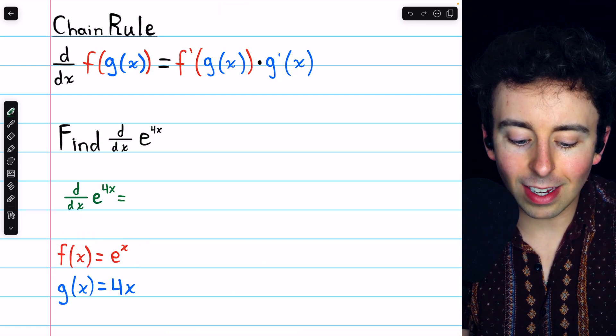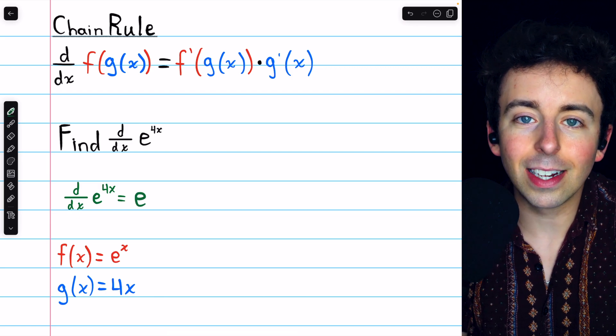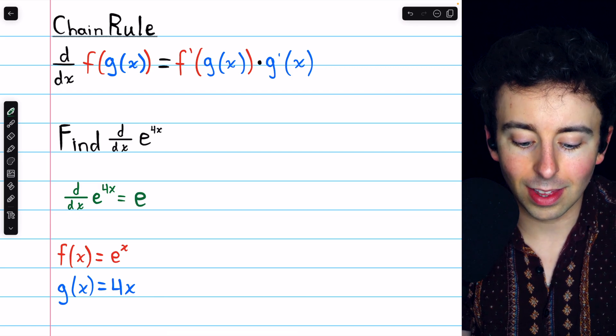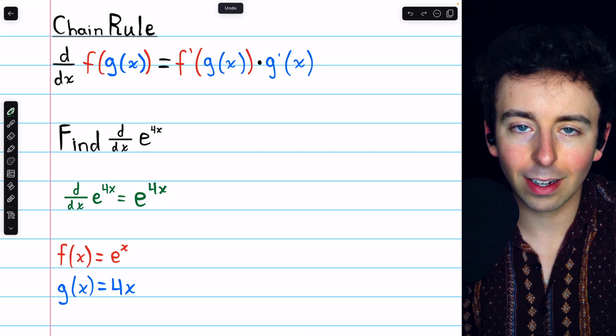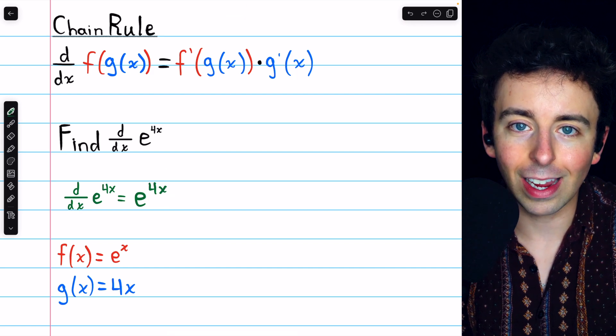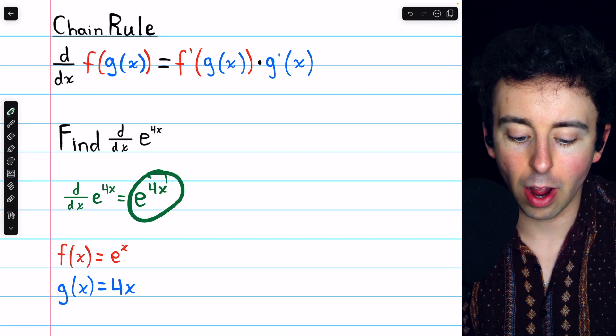The outside function is e to the x, and the derivative of e to the x is just e to the x. Of course, in this case, the exponent is our inside function of 4x, which we must leave unchanged. So that's f prime of g.